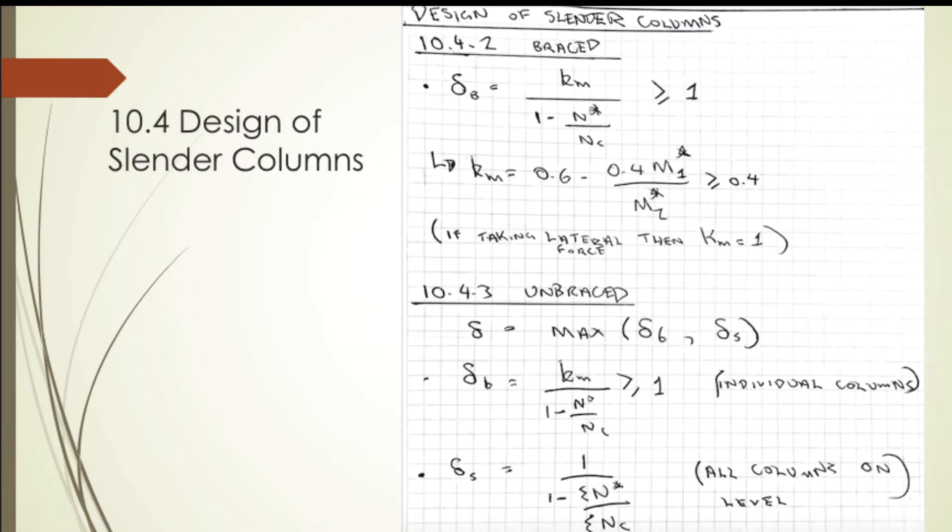Section 10.4 covers the design of slender columns. The biggest difference between a short column and a slender column is that the short column derives strength from the individual cross sections, whereas the slender column has secondary bending moments shown with a moment modification factor.